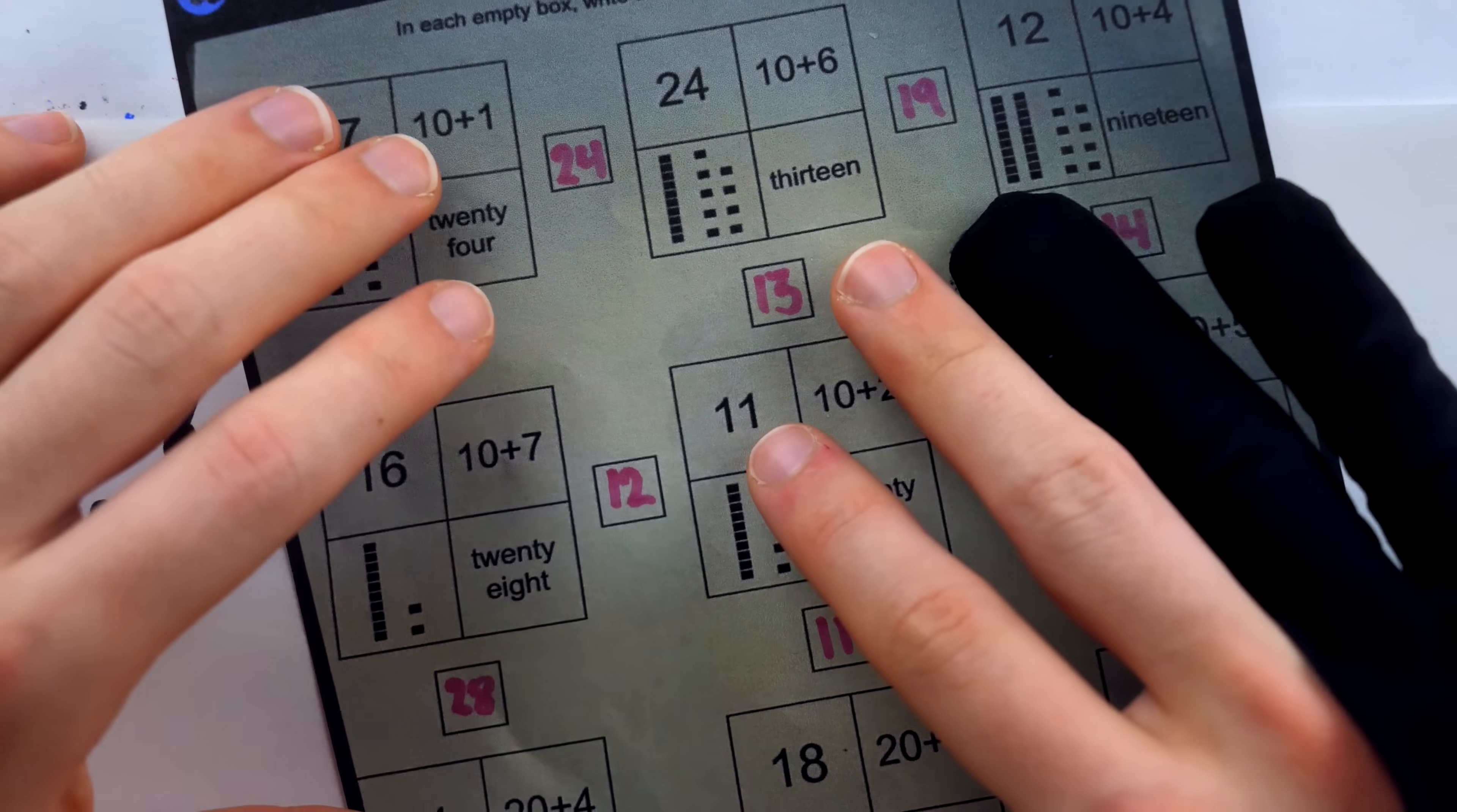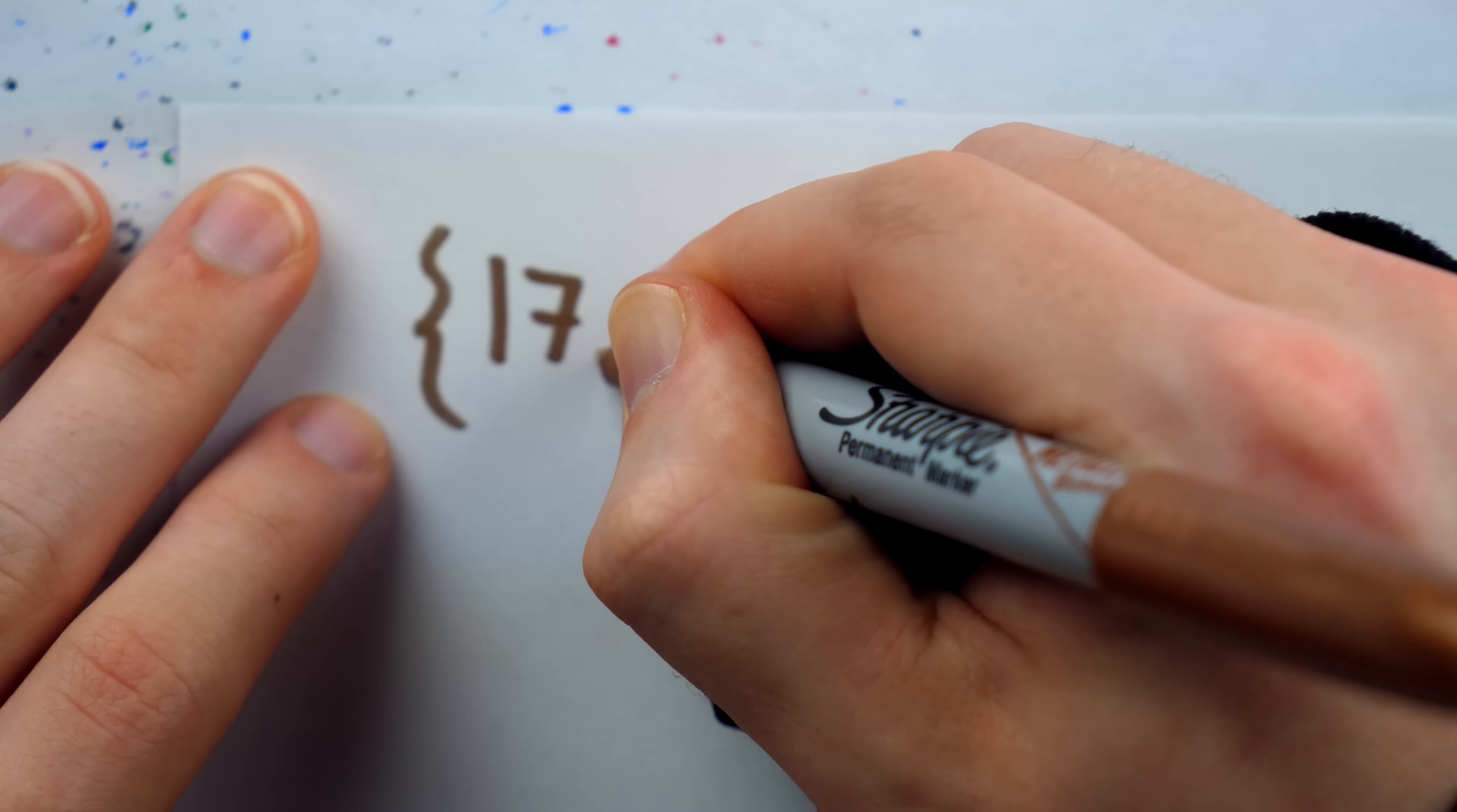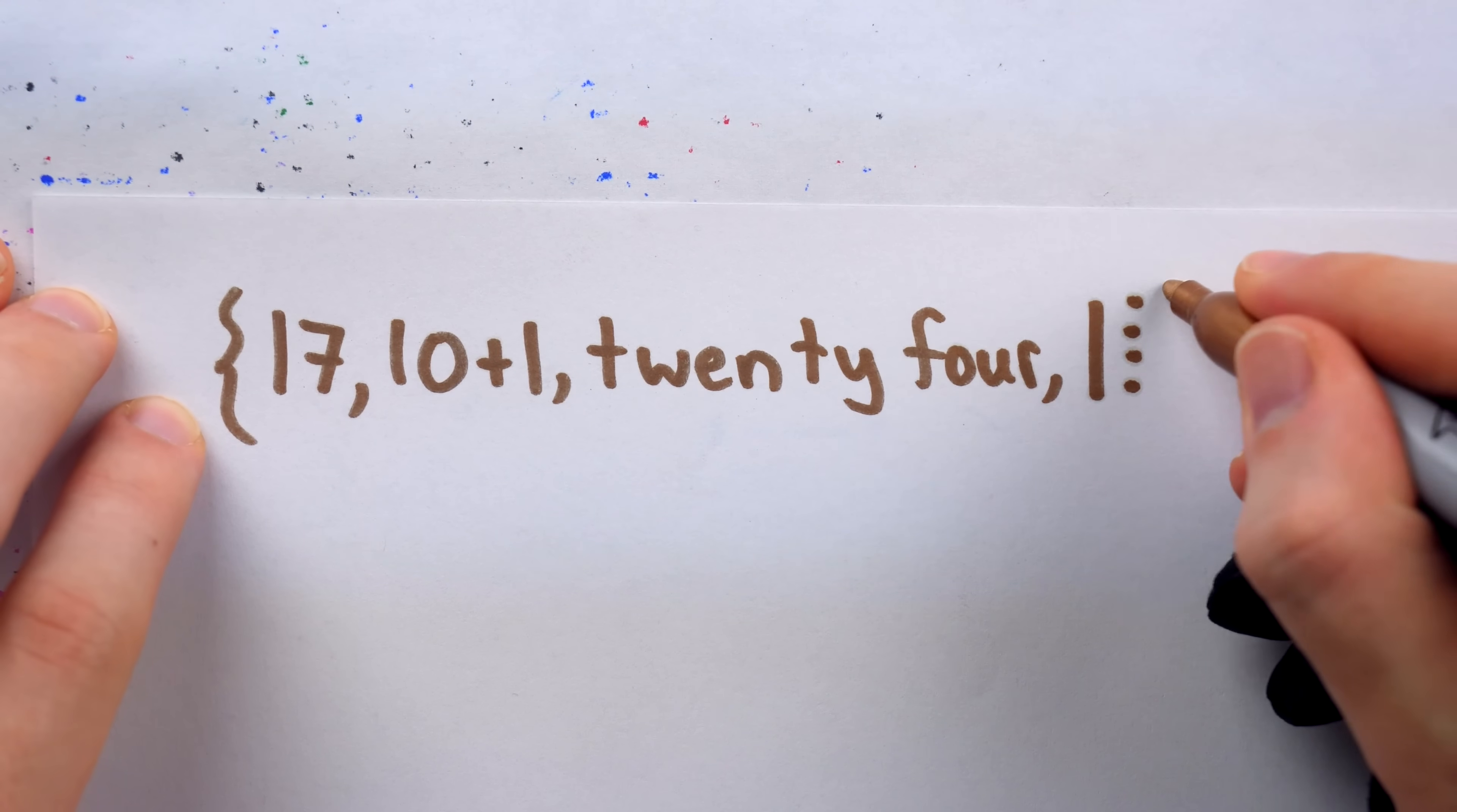If I were drawing this out a bit more formally, this first box for example, we could represent as a set, which is an unordered collection of distinct objects. This set contains 17, it contains the number 11, although it's being expressed this way, it contains the number 24, but expressed in words, and it contains the number 14, but expressed with base 10 blocks. And that's everything that's in that first set.